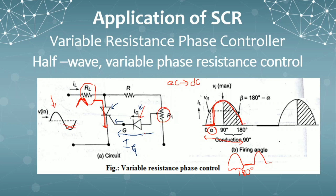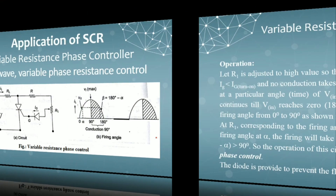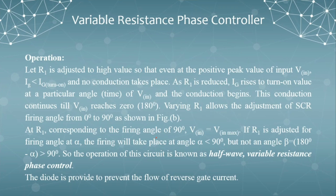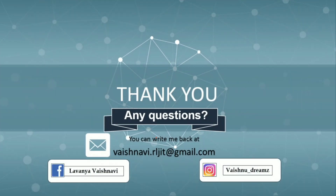You might ask what is the importance of this diode. This diode is a protective device which avoids the reverse flow of current. If there is any reverse flow of current, to avoid damage to the circuit we use this diode D. This is all about SCR — thank you for watching this video. If you have any doubts, you can leave a comment or write to my email. Please like the video, share the video, and subscribe to my channel. Thank you.